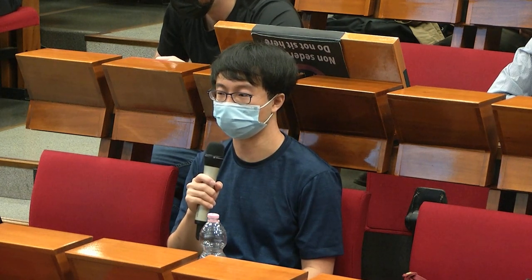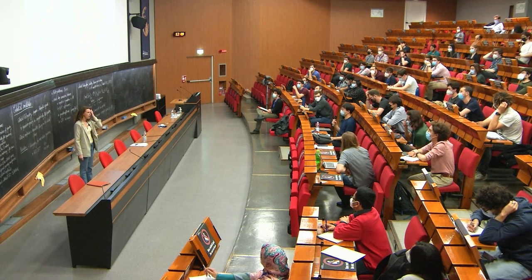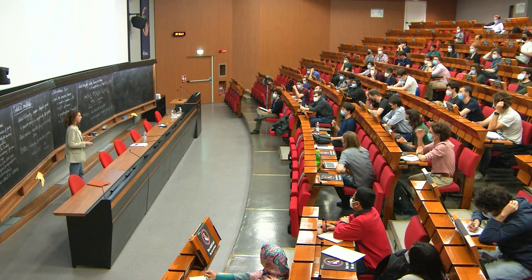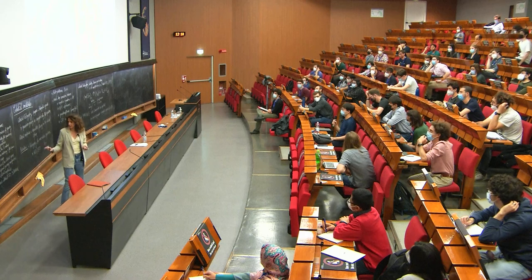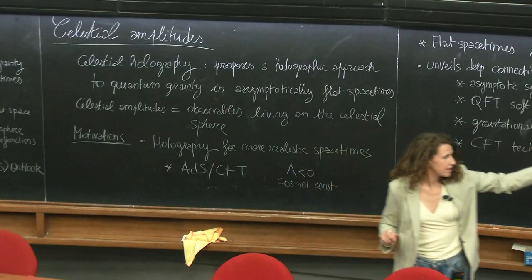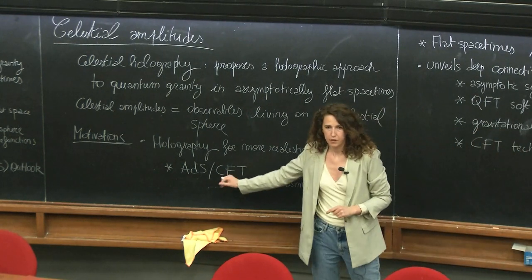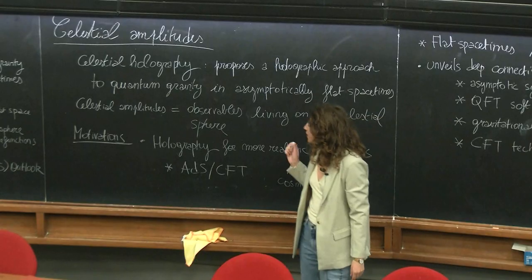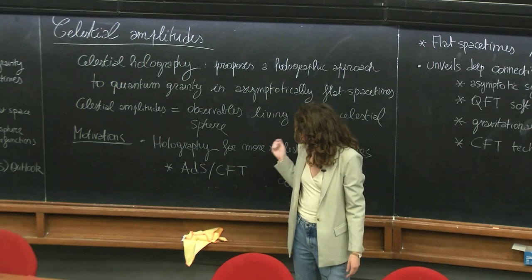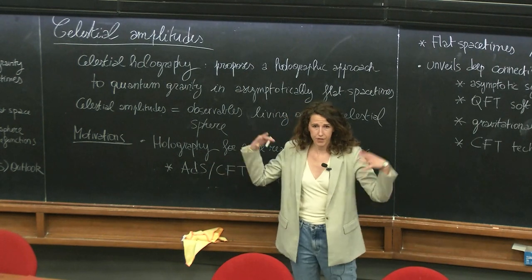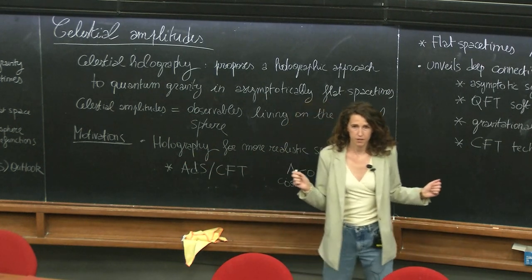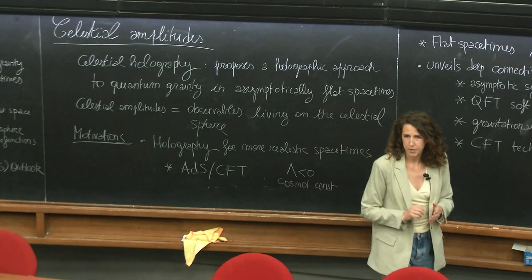Question: Is the celestial CFT related in any way to a limit from AdS₄/CFT₃? As of now, there is no flat limit process giving you the celestial CFT from a flat-space or large-radius limit. But we know, for example, that the S-matrix from flat space can be recovered in the interior of AdS where the curvature can be neglected. The question of which kind of relationship we can have starting from correlation functions in AdS and relating them to the celestial sphere story is very interesting, but not fully understood.